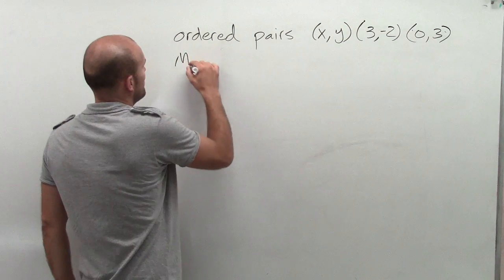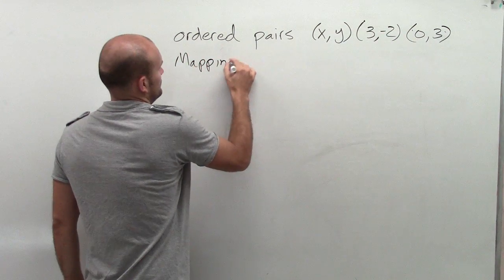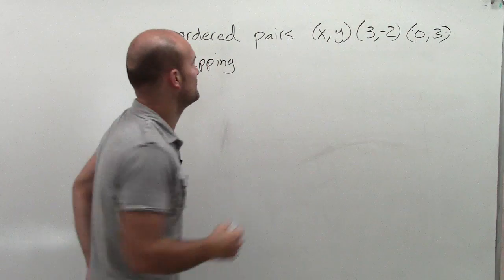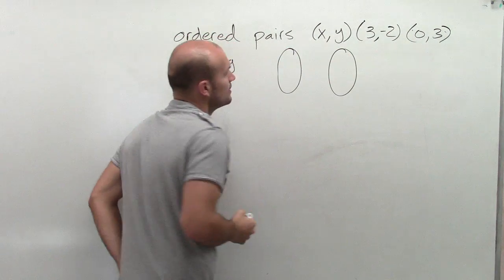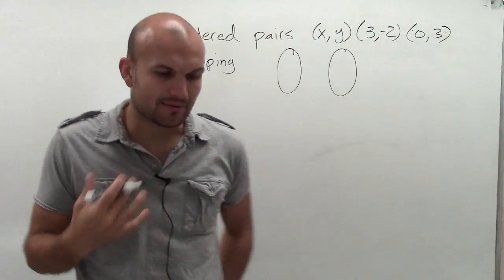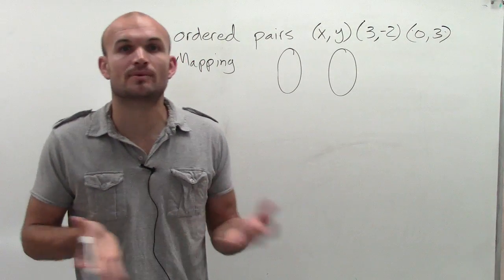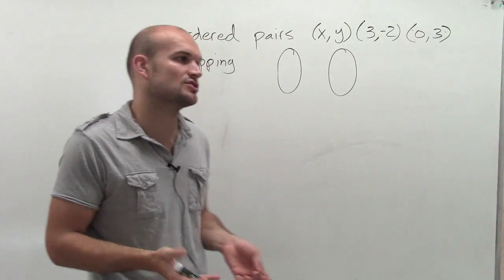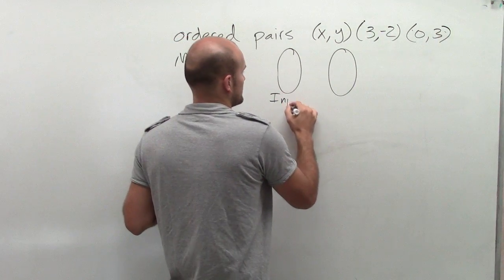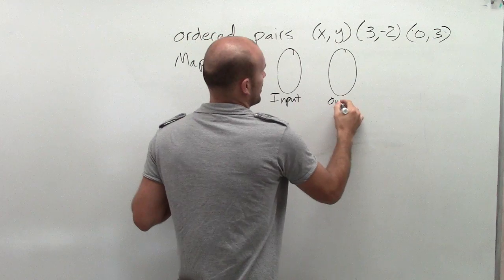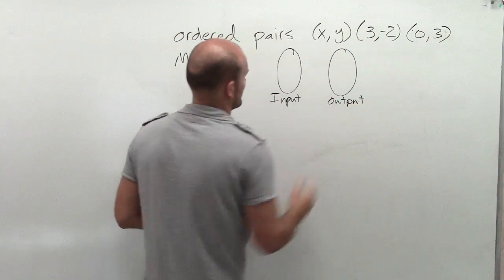The next is our mapping. Now mapping is very useful in being able to describe when things are a relationship or especially when things are a function. And pretty much, mapping just takes us from our input to our output.